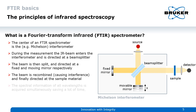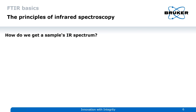That way, the spectral information of all wavelengths can be acquired simultaneously, saving a lot of time. At the end, the detector produces a raw signal of light intensity versus mirror position. But how do we get from here to the classical infrared transmission spectrum?